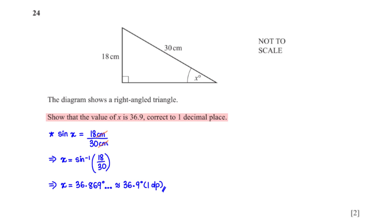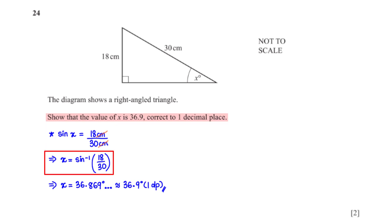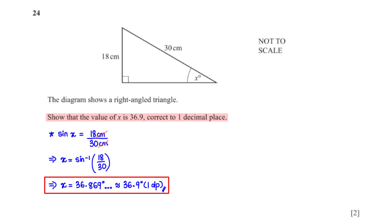To find x we apply SOH CAH TOA. This gives sin x = 18/30. Making x the subject: x = sin⁻¹(18/30). Typing into the calculator gives 36.869 degrees, which is approximately 36.9° rounded to one decimal place.